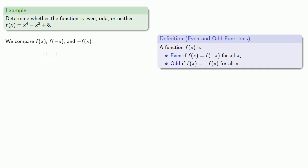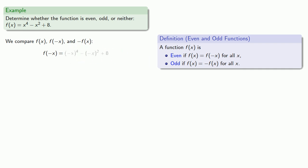So we'll find f of negative x. And we see that this is equal to f of x, and so f of x is even.